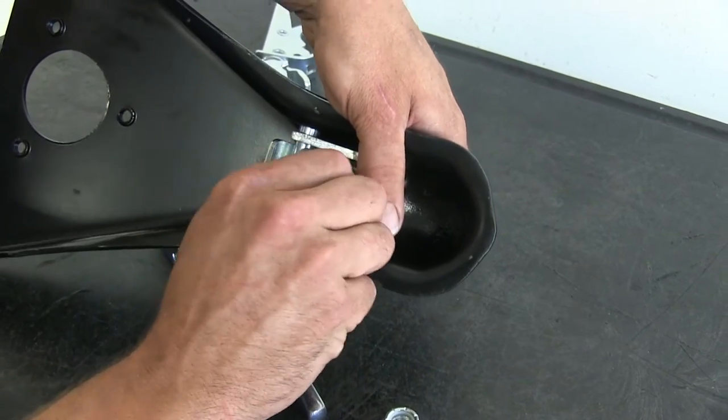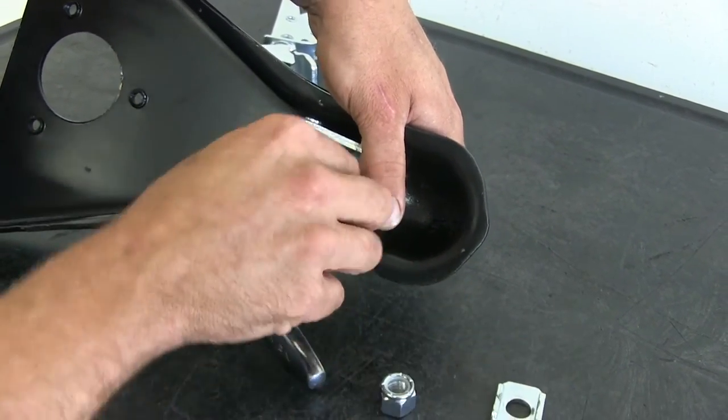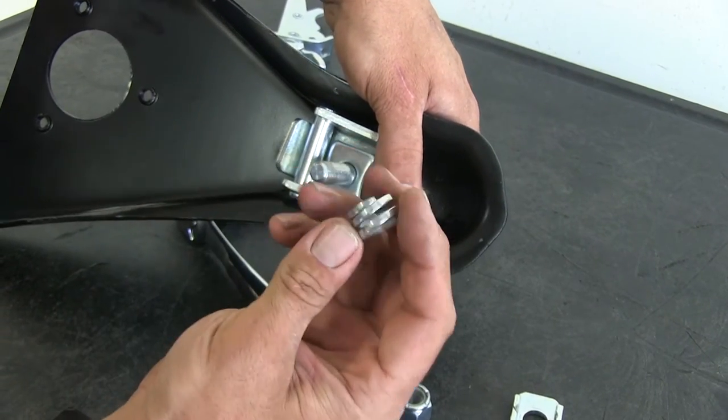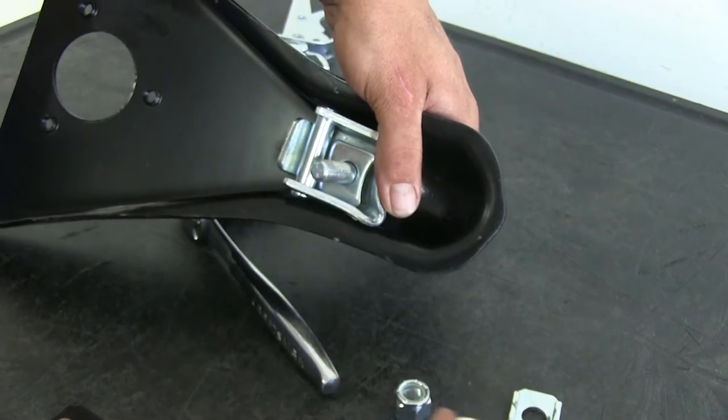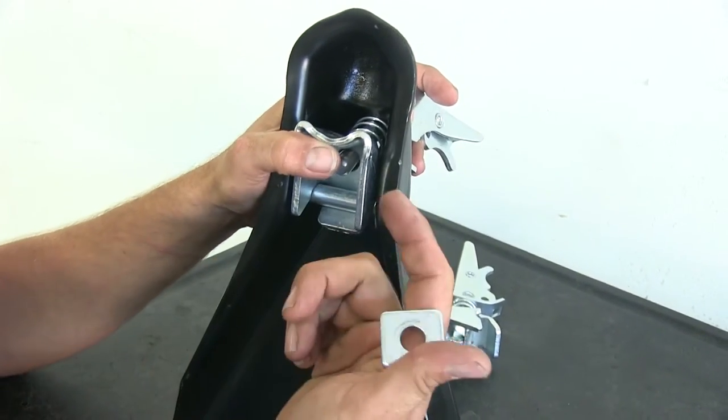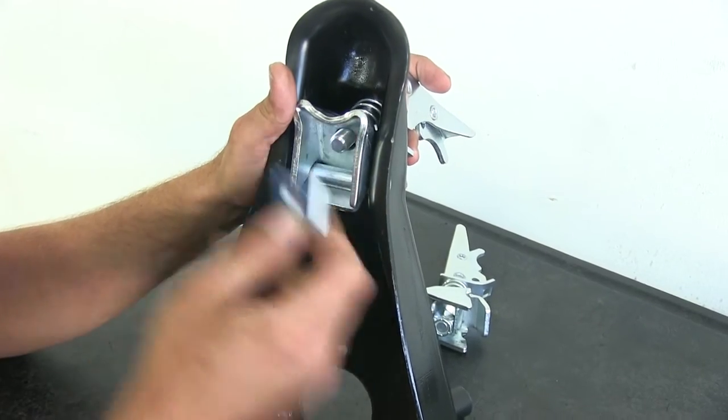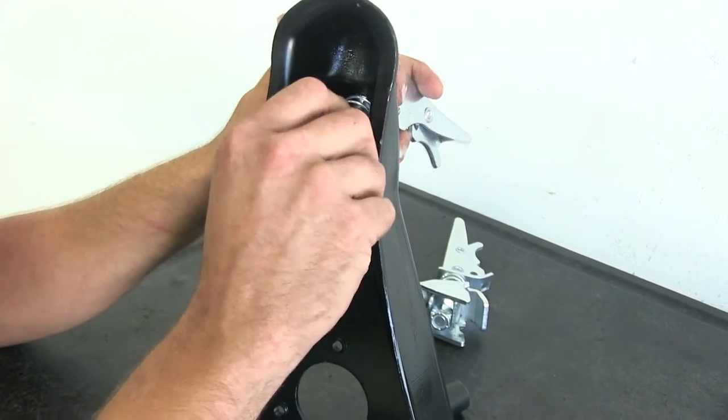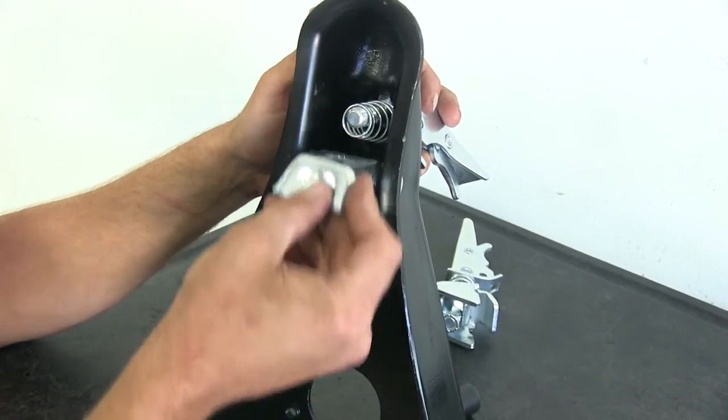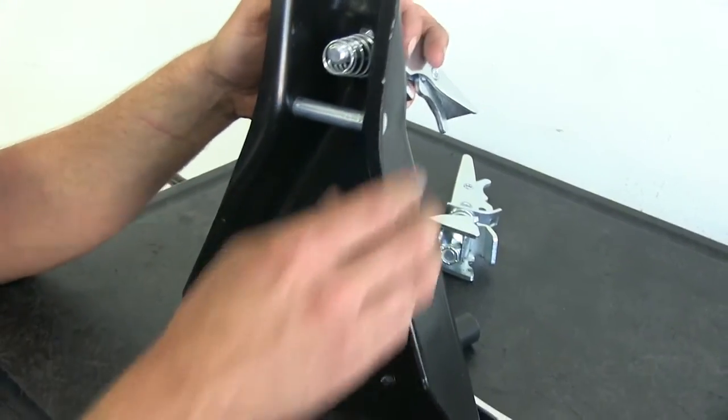You can see that little spring-loaded spacer there, the square spacer there. You can see that's contoured to fit that edge. And then this kind of rotates over that pin. You can see that pin that fits through there. This is going to rotate over that.